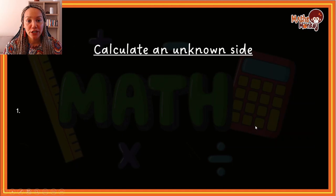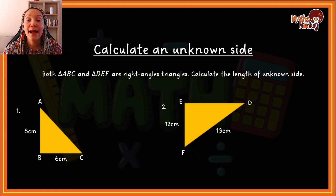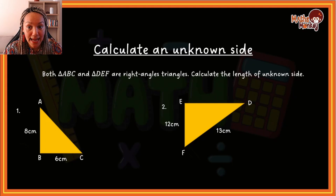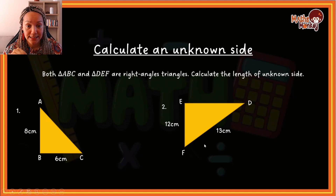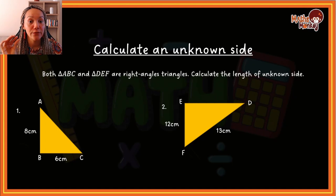The first type we'll look at is how to calculate an unknown side. Both triangle ABC and triangle DEF are right angled triangles — calculate the length of the unknown side. They are telling you that both are right angled triangles, which means Pythagoras is relevant. If you do not see that this is a right angle triangle, you cannot apply Pythagoras.